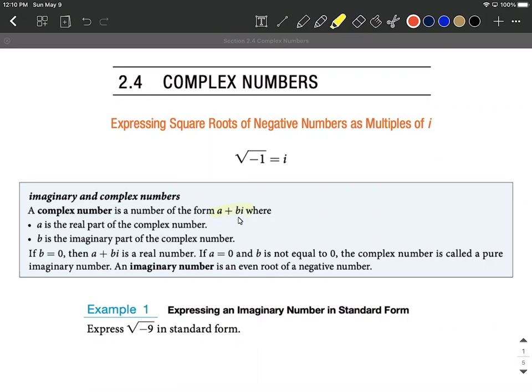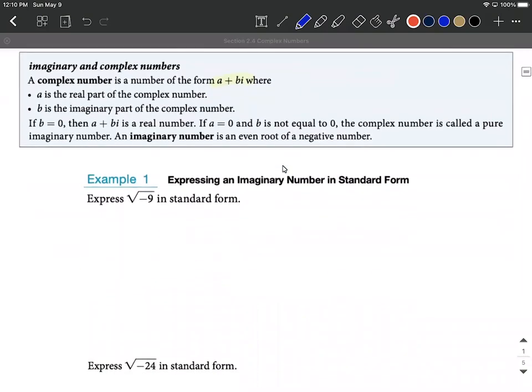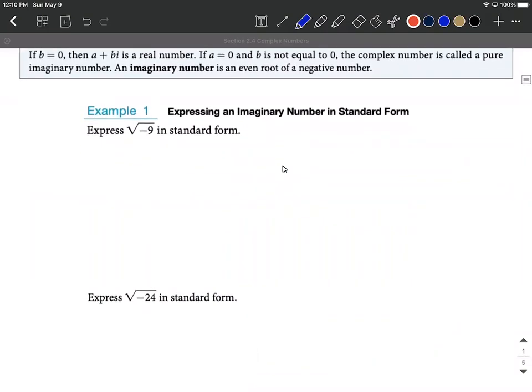So if we do have a square root of negative one or an i, that's going to go in this imaginary part at the end. Now finding these or simplifying these down really isn't that bad. What we want to do is be careful that if we ever have a negative underneath the square root, we're going to replace that with an i. So let's work a few of these examples and show you exactly what we mean by this.